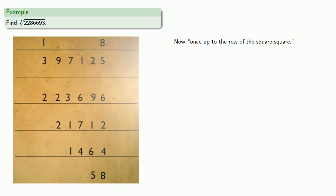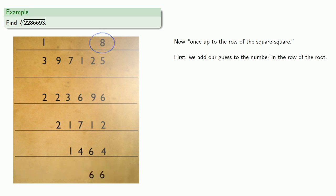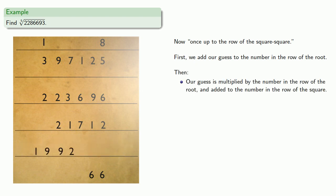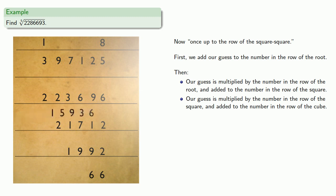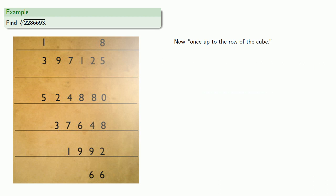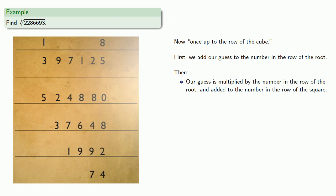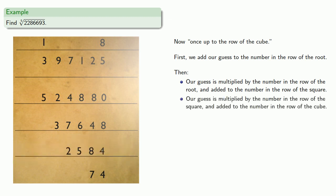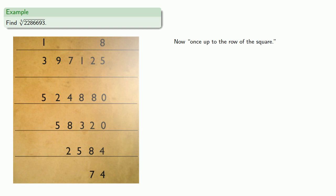And we go through our procedure again: once up to the row of the square square — add guess to number, guess times number and add, guess times number and add, guess times number and add, and stop. Now once up to the row of the cube: add guess to number, then guess times number and add. And we go once up to the row of the square, and once up to the row of the root.